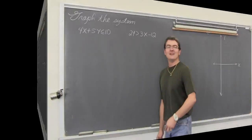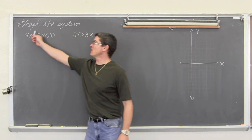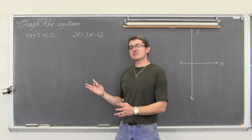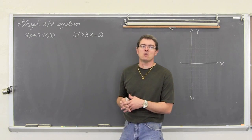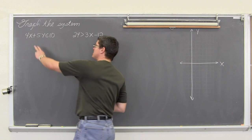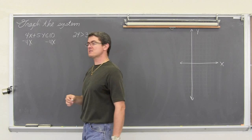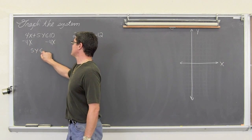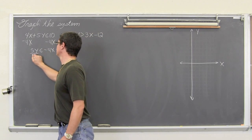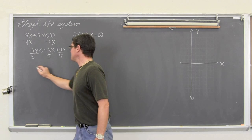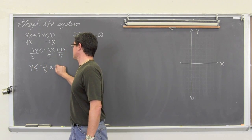First example: here is our system of linear inequalities. We know that because all of our exponents are just exponents of one. We are going to put these in slope-intercept form because that is the easiest way to graph a line, and it is also very easy to shade inequalities when y is by itself. So we subtract both sides by 4x and get 5y is less than or equal to negative 4x plus 10, then divide everything by 5.